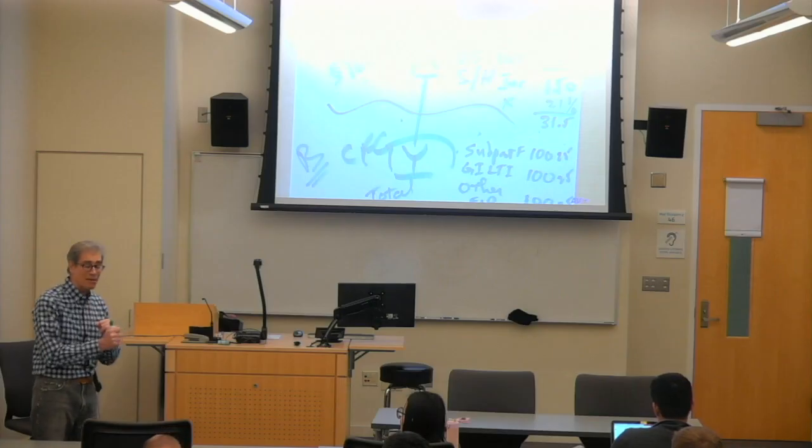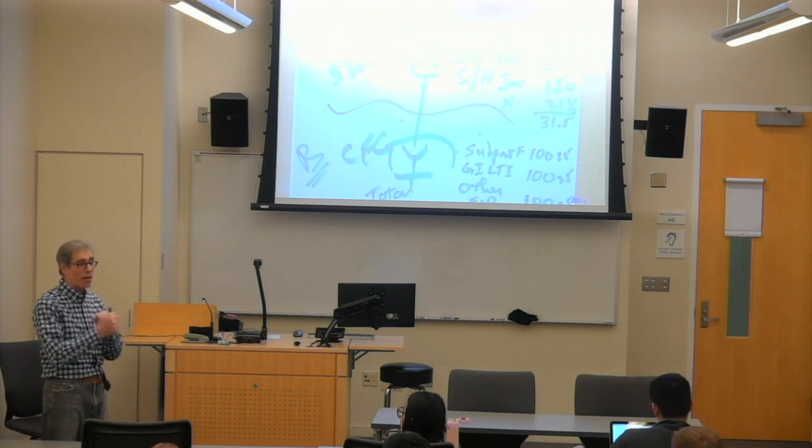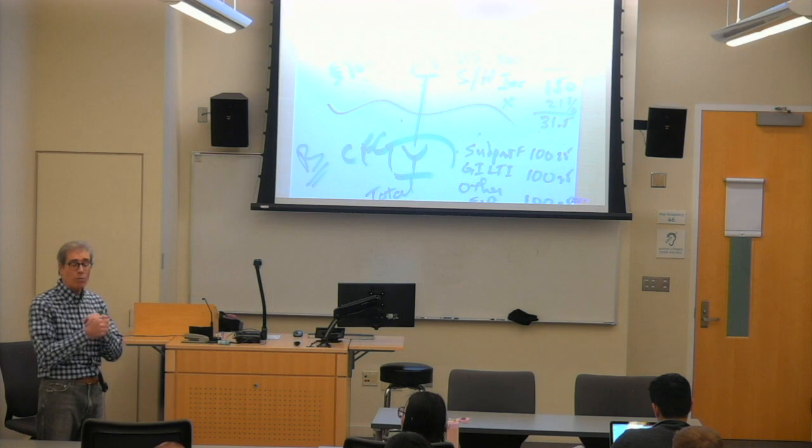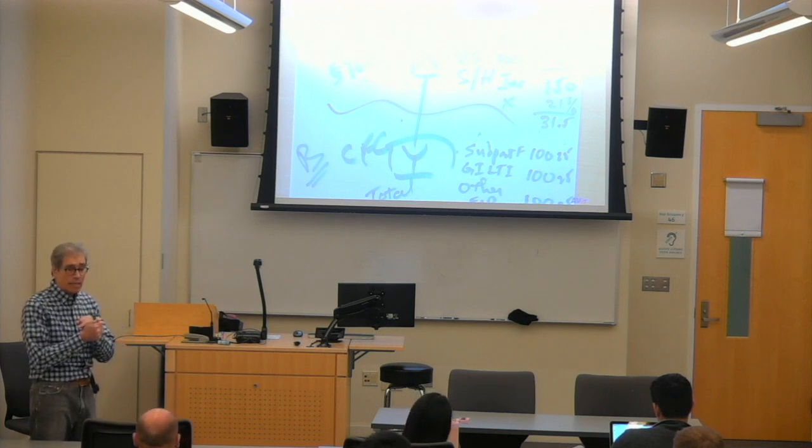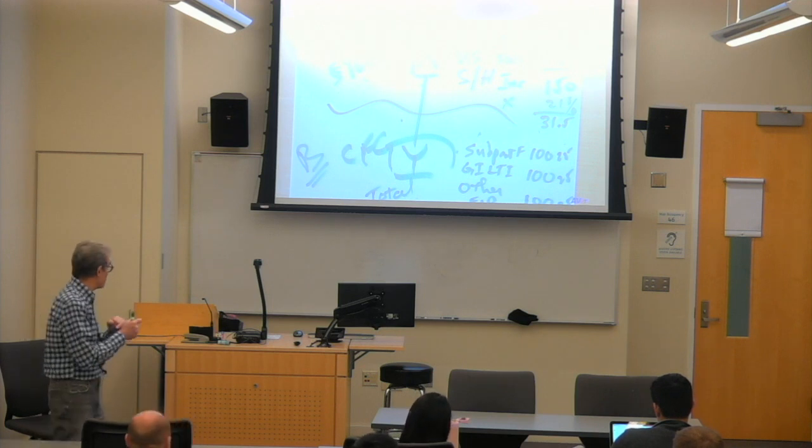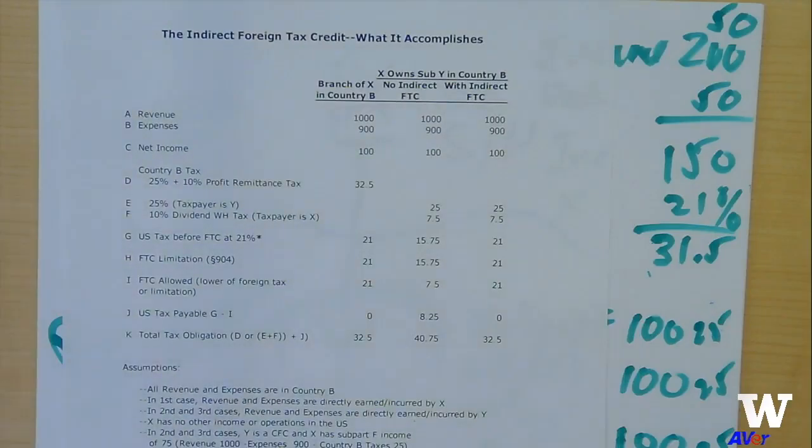The amount of subpart F income and the amount of guilty are after tax numbers. You may recall when we talked about the foreign tax credit that I handed out a sheet. Does that look familiar? We showed that the US tax, the base for the US tax in the third column, the country B with indirect foreign tax credit. We said that the US tax, the base for that was after adding back the deemed paid taxes. That's the section 78 gross up. You have to do that or the numbers don't work out.